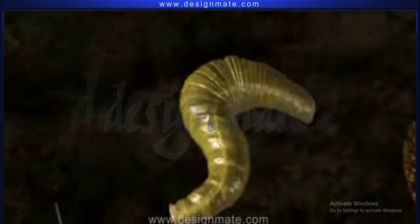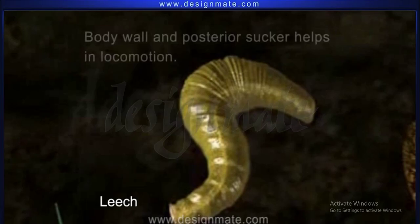In some animals like the leech, setae are absent but a body wall and posterior sucker helps in locomotion.